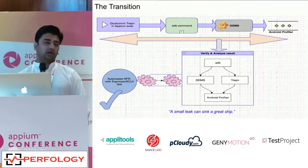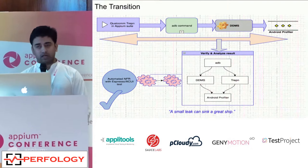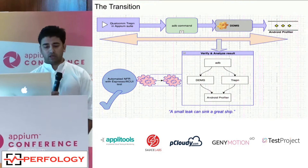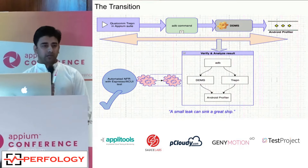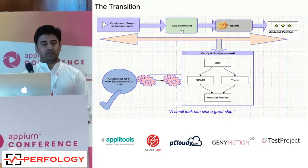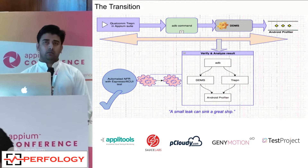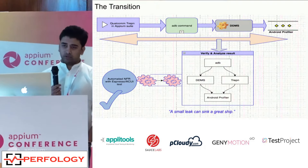Our journey began with manual testing of performance matrices using third-party applications available on the Play Store and over the internet. But the data was not reliable — every application had its own benchmark, and we didn't have a standard benchmark. We then moved on to the Trepn tool by Qualcomm. The beauty of that tool was that it installs as an APK which lays an overlay over your application under test, and after test execution gives you all key matrices in one place.